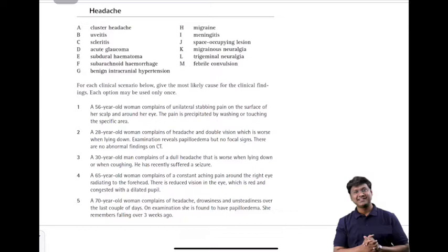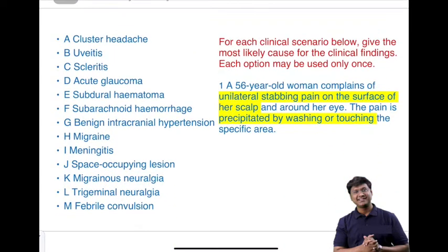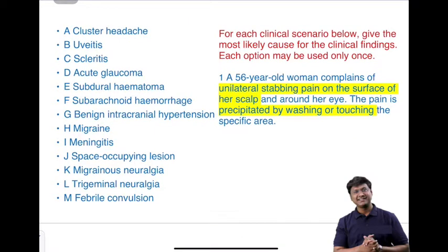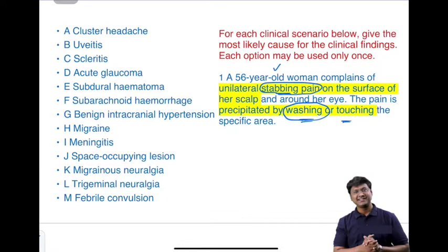I will be discussing various clinical scenarios and you should identify the diagnosis. The first clinical scenario is a 56-year-old woman who complains of unilateral stabbing pain on the surface of her scalp and around her eye. The pain is precipitated by washing or touching that specific area. This is suggestive of trigeminal neuralgia.